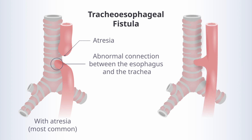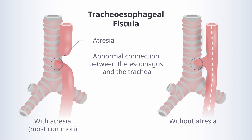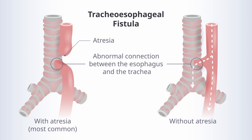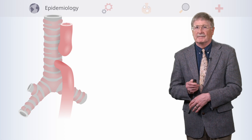And then finally, we have the entity which is a fistula without atresia — a connection between esophagus and trachea, but the esophagus itself is one continuous tube, and everything flows down that way. With this, though, you can probably anticipate that there are going to be problems because of the abnormal connections and/or the gaps that can occur within the esophagus.